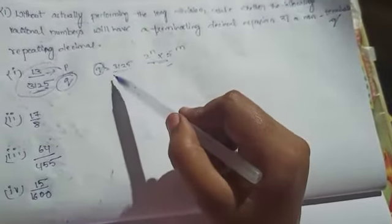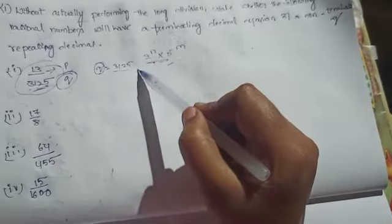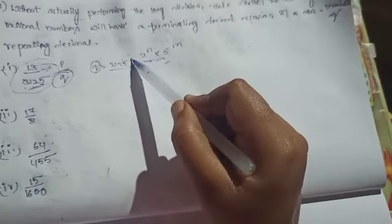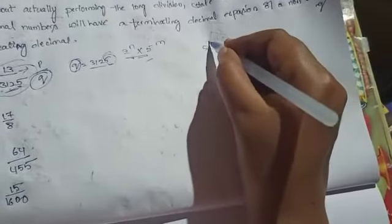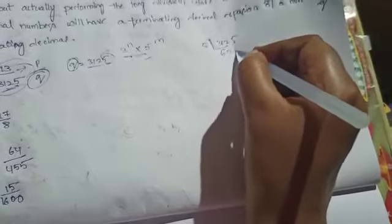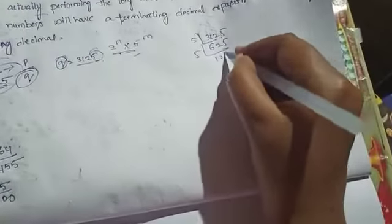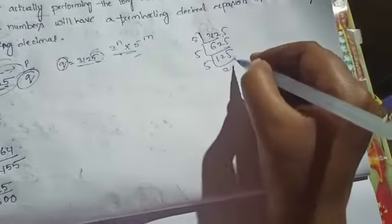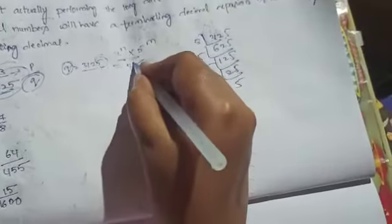Here q equals 3125. Last digit is 5, so it is exactly divisible by 5. Factorizing 3125: it gives 5 power 5.